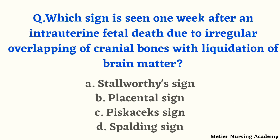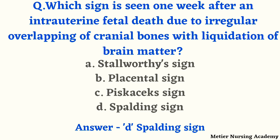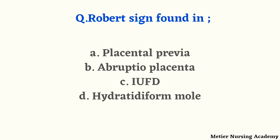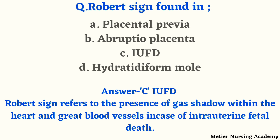Which sign is seen one week after intrauterine fetal death due to irregular overlapping of cranial bones with liquefaction of brain matter — Stalwart sign, placental sign, Piscousic sign, or Spalding sign? The right answer is option D, Spalding sign. Spalding sign is an indicator of intrauterine fetal death in which abdominal ultrasound shows overriding or overlapping of the fetal cranial bones, usually appearing on the 7th day after fetal death. Robert sign is found in intrauterine fetal death and refers to the presence of gas shadow within the heart and great blood vessels.